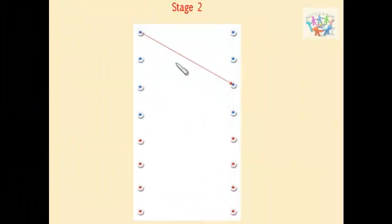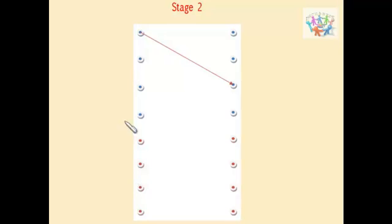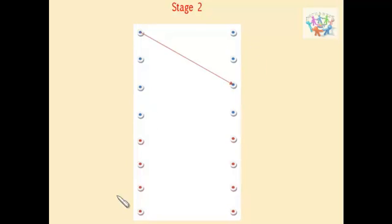For stage 2, we have 4 pairs of points. Take the first pair: join the first 2 points with the last 2, and the last 2 with the first 2. Similarly, for the second pair, join the first 2 points with the last 2 and the last 2 points with the first 2.